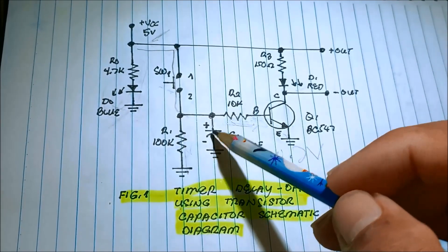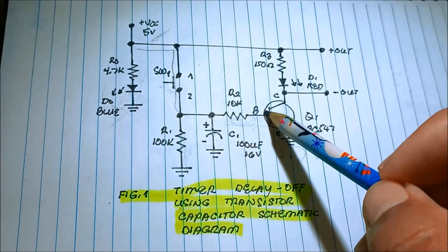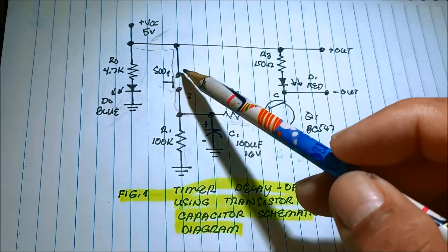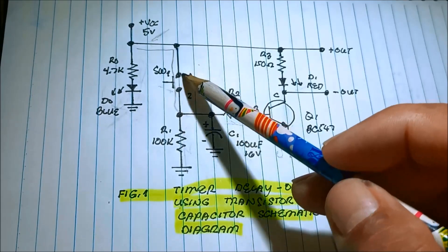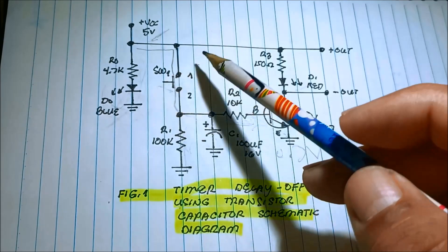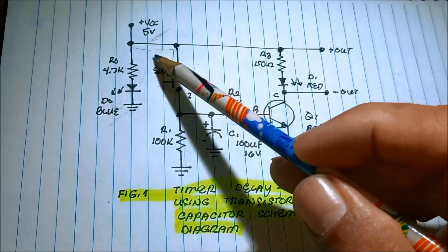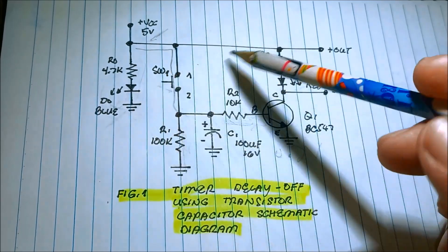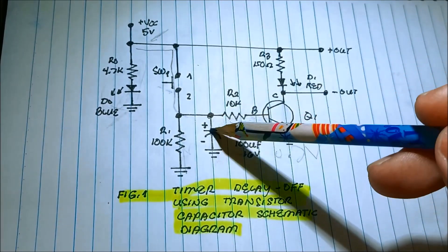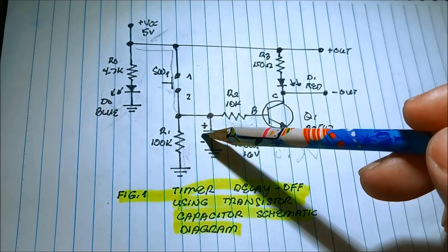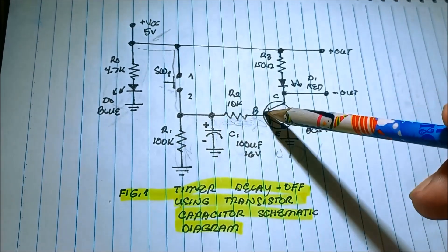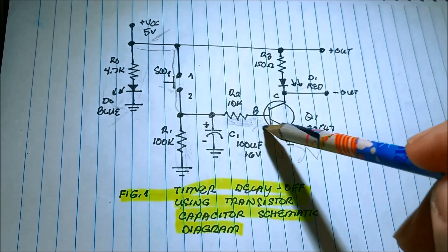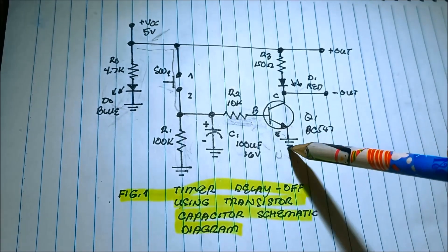This capacitor serves as a power supply to the circuit, because once we release the switch, the capacitor starts discharging — from charging, it is now discharged through the 100K and to the 10K — causing the current to flow to the base, switching this transistor on, and developing 0.7 volts.